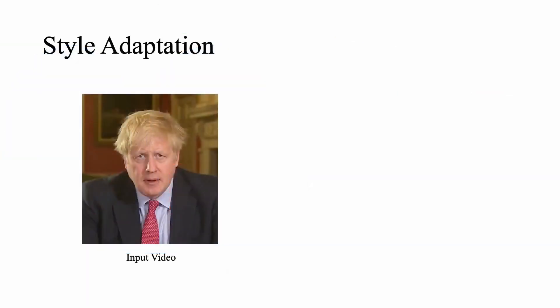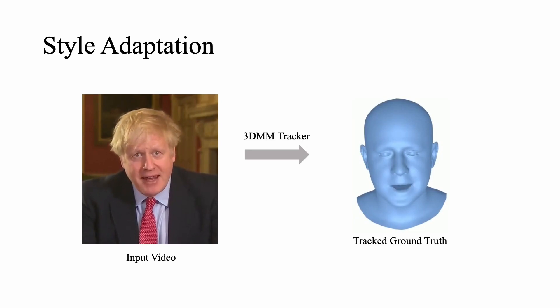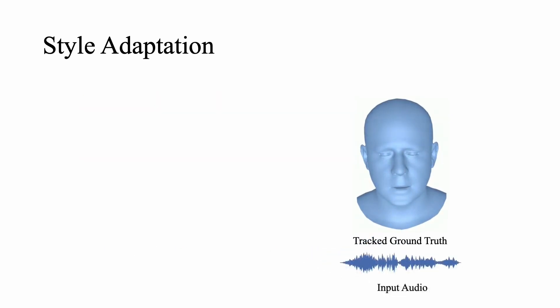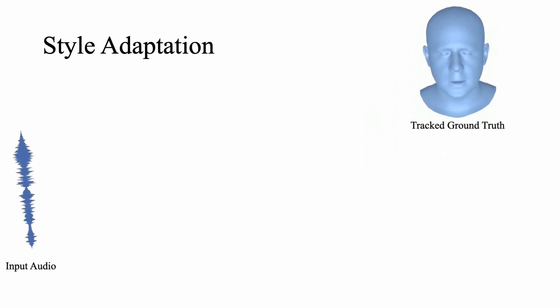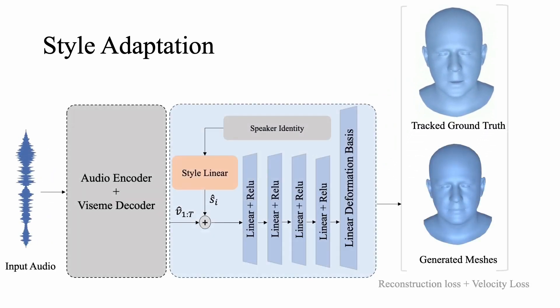For learning personalized speaking style, we use a face tracker to extract meshes from the reference input video and we also extract input audio from the video. We pass the input audio through our style-agnostic transformer to produce a generic animation. Then we optimize the style embedding using a reconstruction and velocity loss. In addition to the style embedding, we also refine the motion basis of the decoder to capture the facial idiosyncrasies.